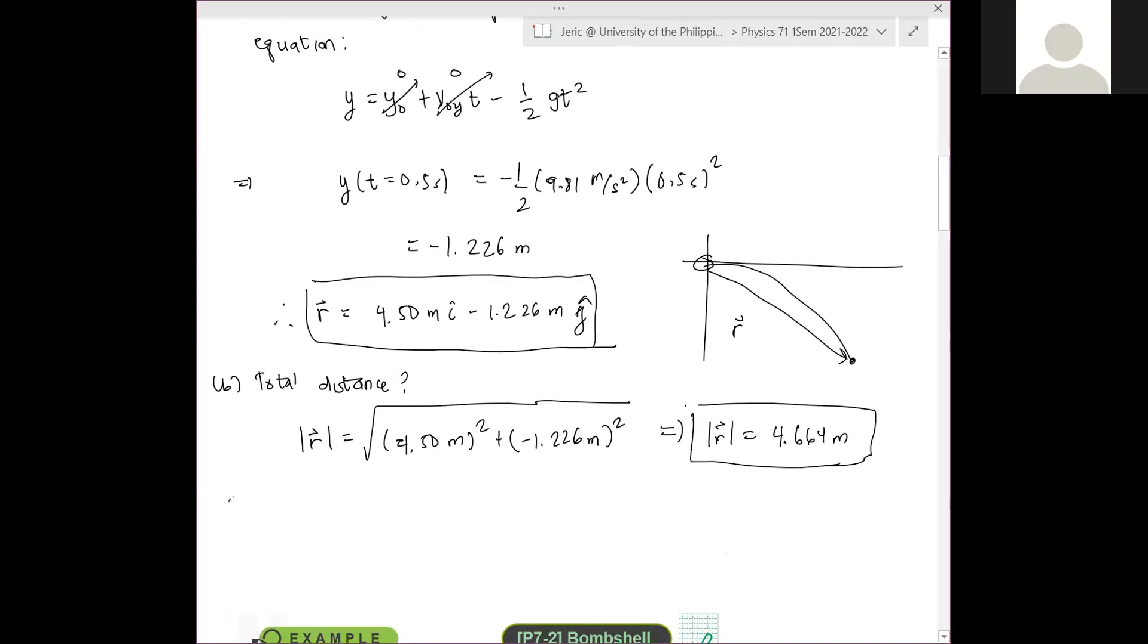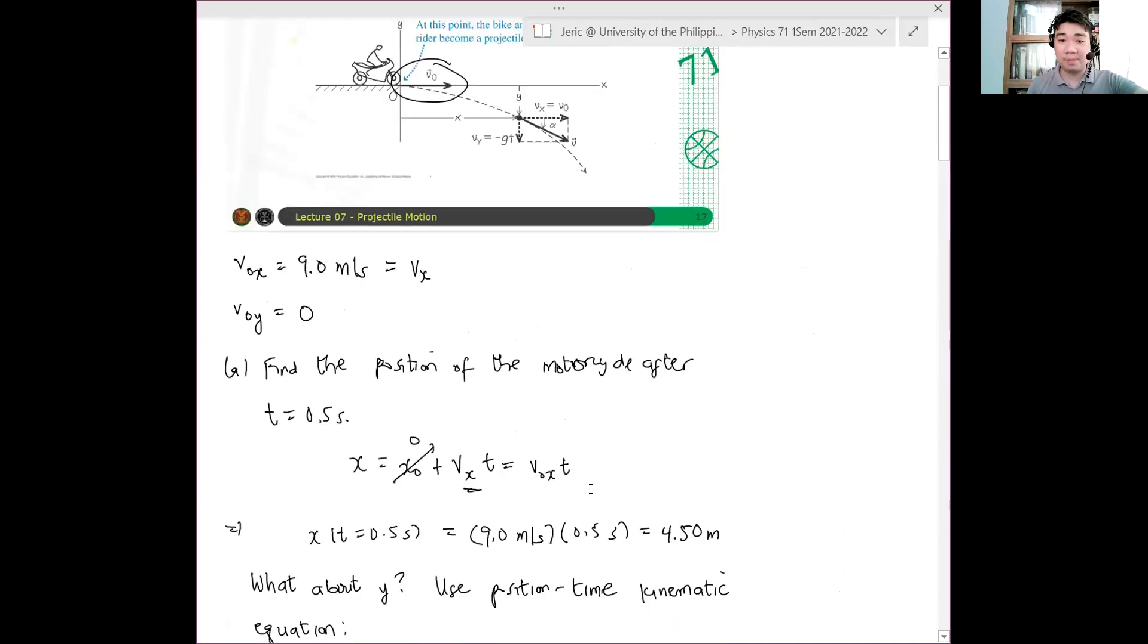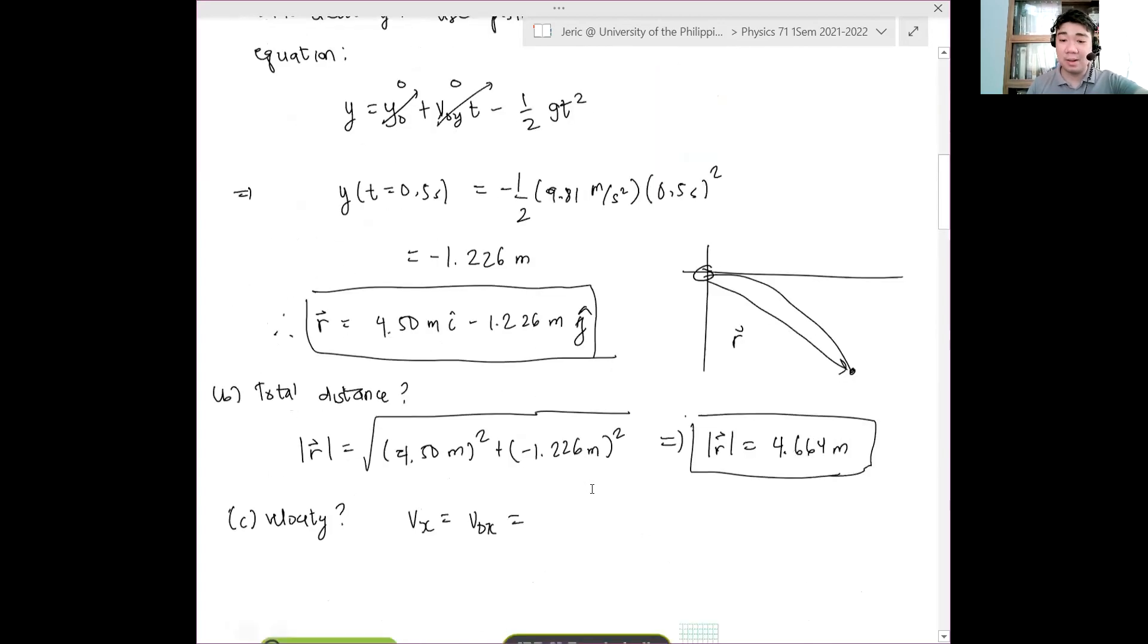And then, after that, you have the velocity. What about the velocity? Your Vx is just equal to what? I already told you this earlier. It's the same velocity as that initially. So this is equal to V naught x. And therefore, this is just what? From the problem, we have 9 meters per second.